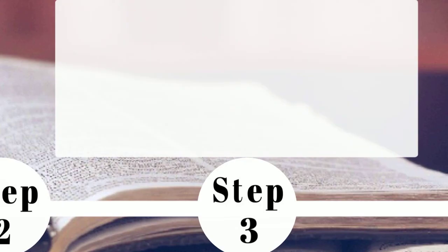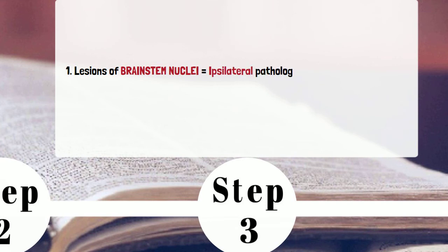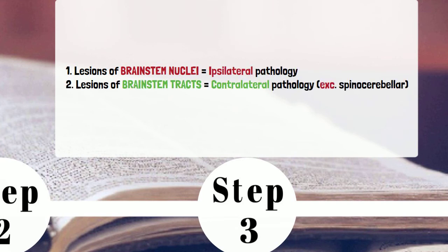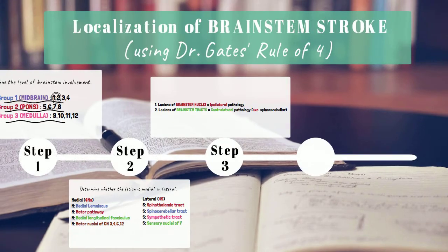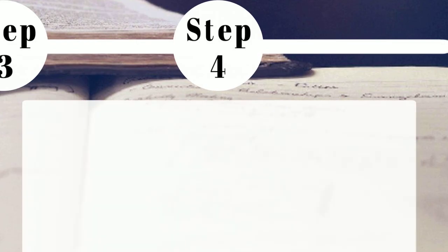Step 3: Lesions of nuclei cause ipsilateral pathology, while lesions of tracts cause contralateral pathology in the brainstem. Step 4: Recognize the exceptions for midbrain and pontine strokes.